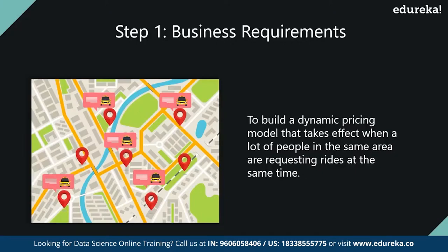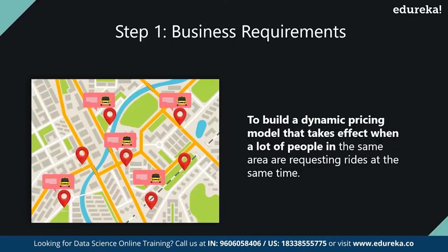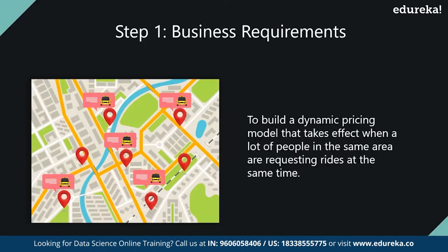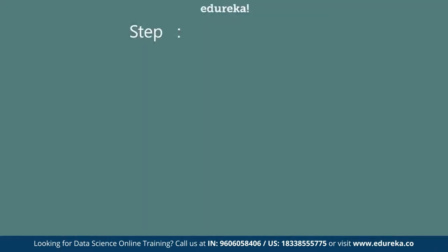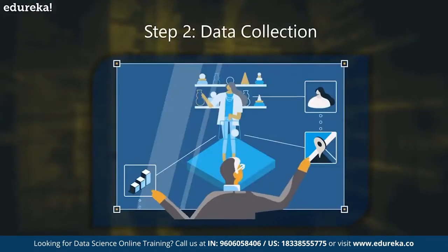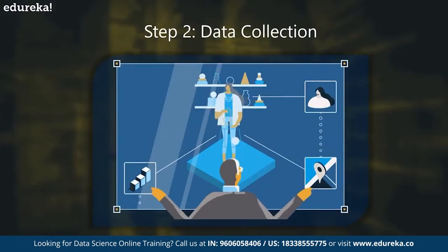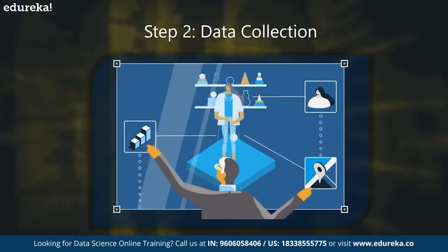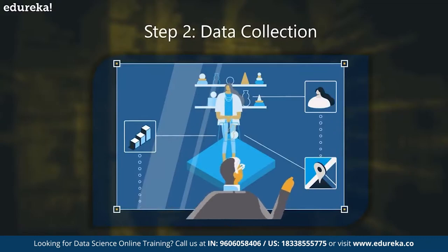In this case, the business requirement is to build a dynamic pricing model that takes effect when a lot of people in the same area are requesting rides at the same time. This is followed by data collection. Uber collects data such as the weather, historical data, holidays, time, traffic, pickup and drop location, and it keeps track of all of this.